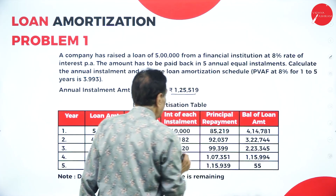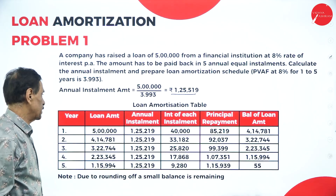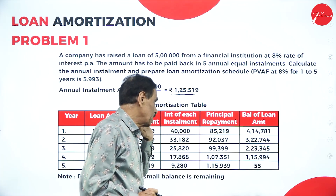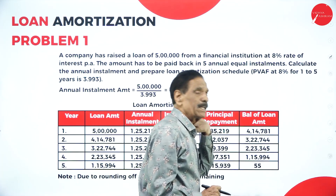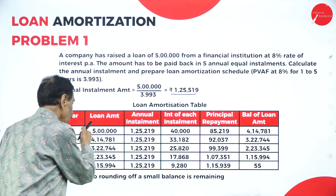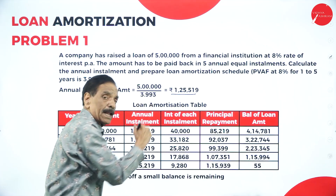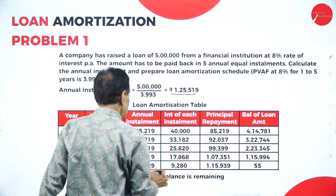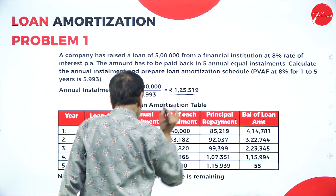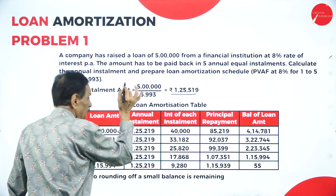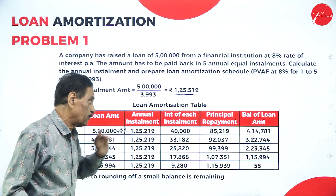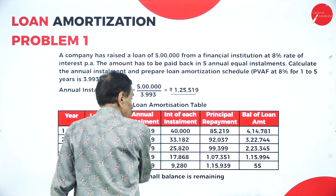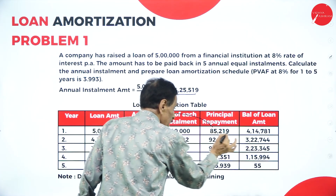Total amount divided by discount factor: 5 lakh divided by 3.993, it works out to 1 lakh 25,519. We will start the table with columns: loan amount, annual installment, interest of each installment, principal payment, and balance of loan amount. Total loan is 5 lakh; installment is 1 lakh 25,219, which includes interest. 8% of 5 lakh is 40,000. From 1 lakh 25,000, deduct 40,000; difference is 85,219, deducted from the loan balance.